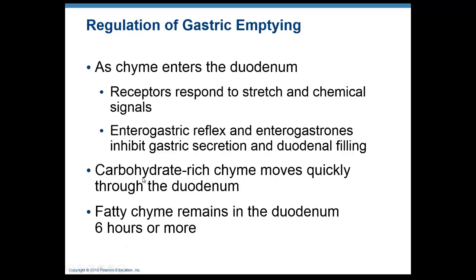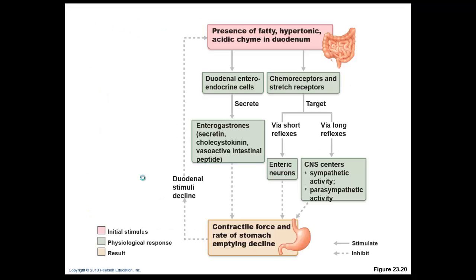Different hormones and the balance of sympathetic versus parasympathetic activity affect movement of food through the digestive tract and promote gastric secretion and emptying. Dashed lines in the diagram represent inhibitory effects on the stomach. We won't go into more detail beyond what's on the study guide.